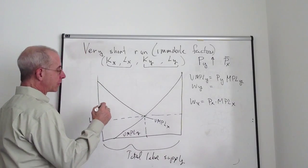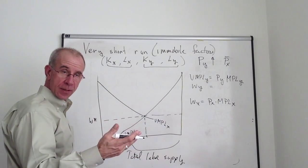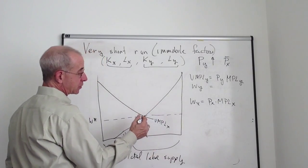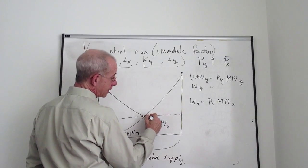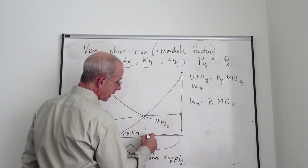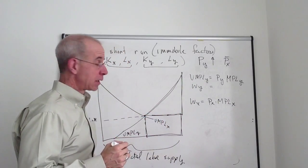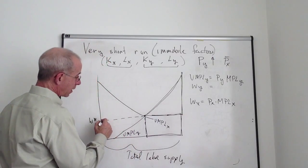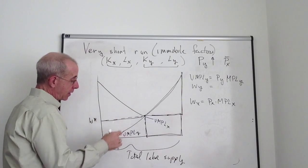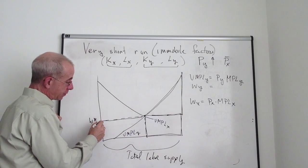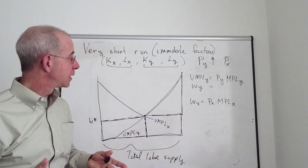We have these different depictions of the payments to labor and capital in the two graphs. For example, for labor, the total amount that labor gets in industry X is given by this box, and this area is the amount that capital earns in good Y — that's the nominal return to capital in good Y, and they earn wage times labor. That's the initial situation before any price has gone up.